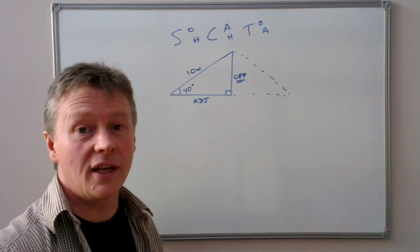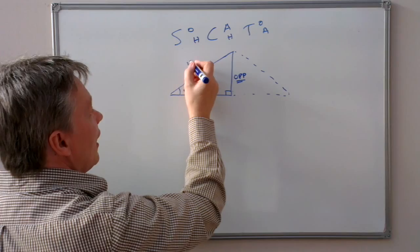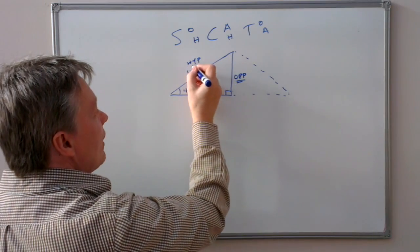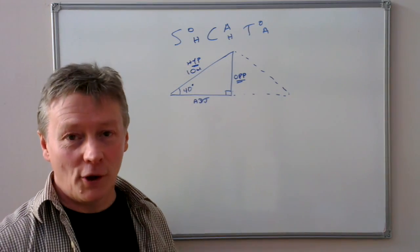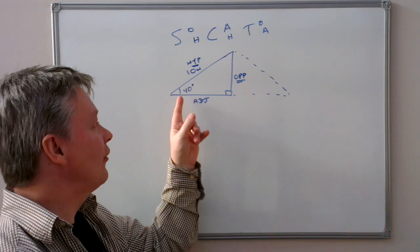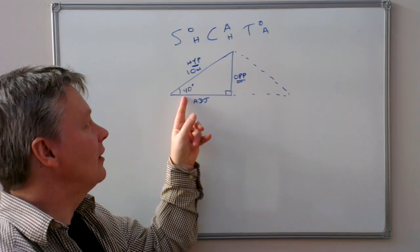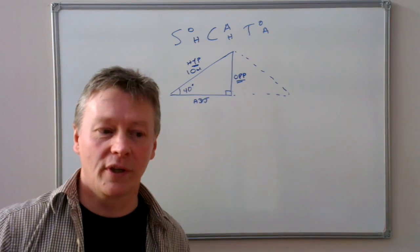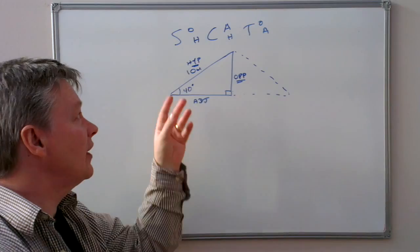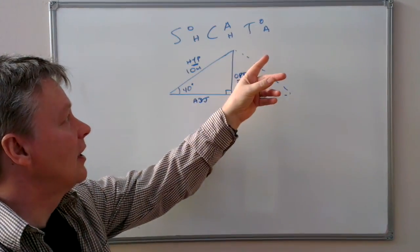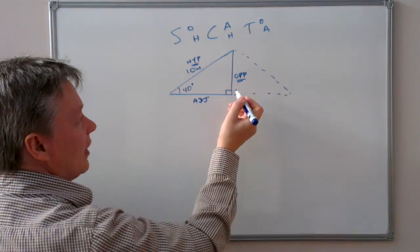And the long length is called the hypotenuse. So the 40 degrees here we know, and 10 meters here that we know. So if we look at these relationships, the information that we're trying to get is this, the opposite.